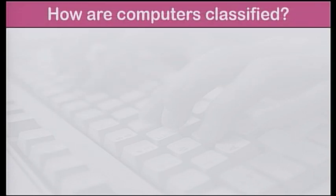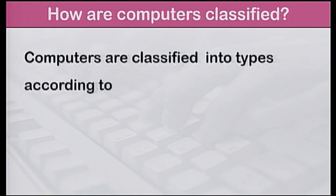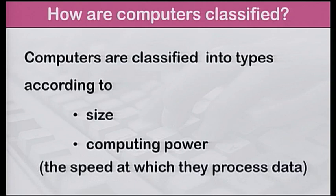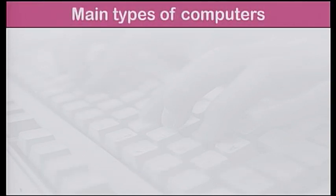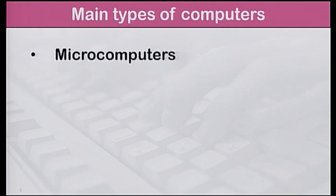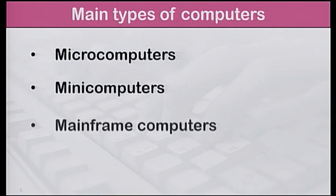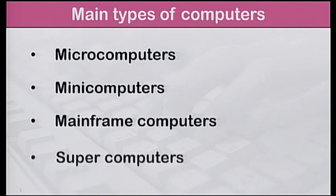How are computers classified? Computers are classified into types according to their size and their computing power, that is, the speed at which they process data. The main types of computers are microcomputers, minicomputers, mainframe computers and supercomputers.